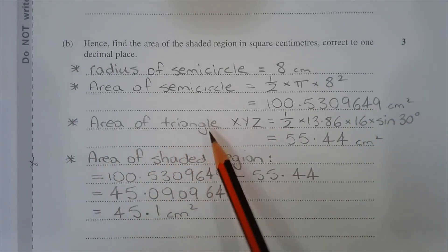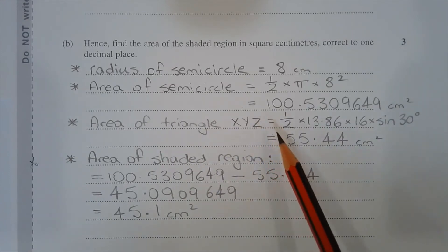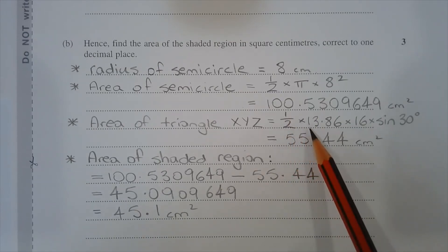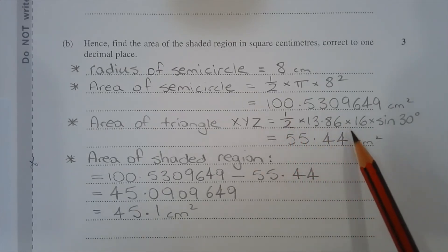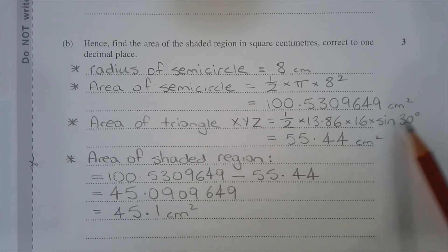The area of triangle XYZ is found using the area rule for triangles. That's half AB multiplied by sin C. So that's equal to half multiplied by 13.86 multiplied by 16 multiplied by sin of 30 degrees and that's equal to 55.44 square centimetres.